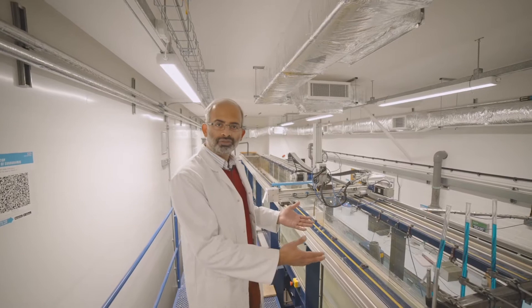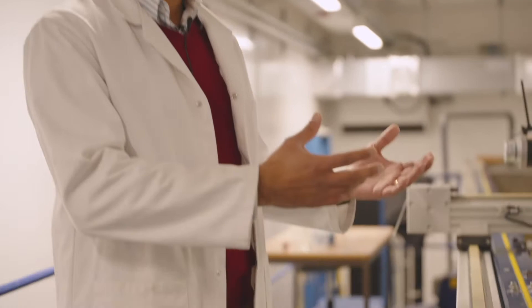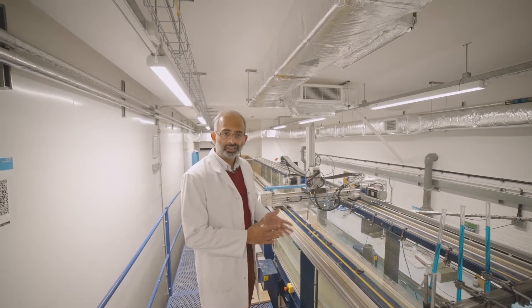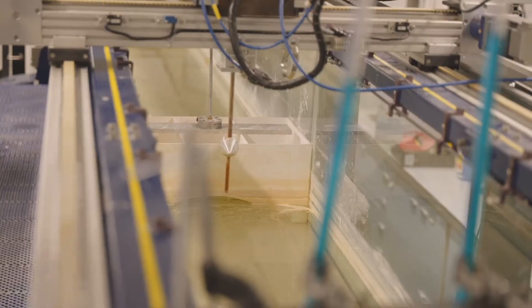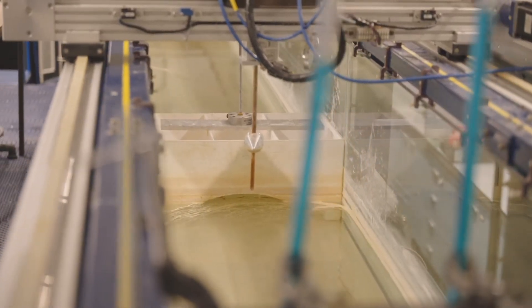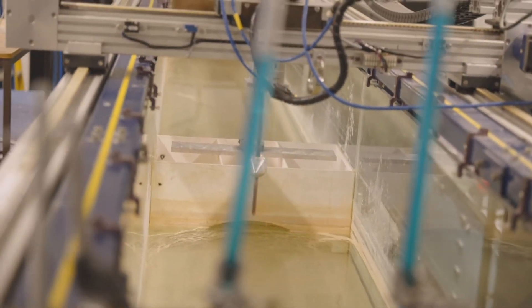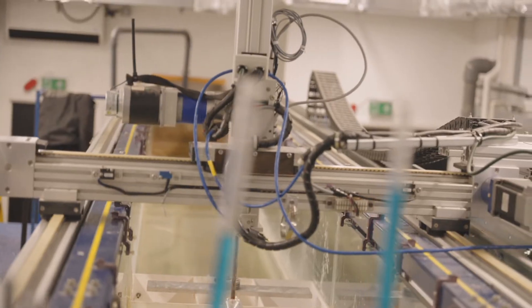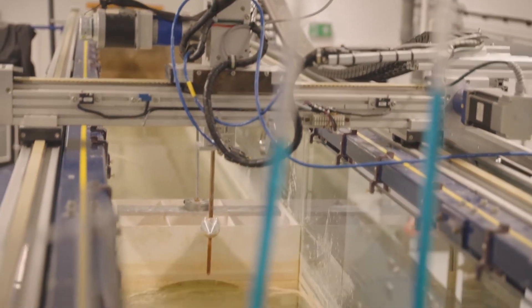We use this kind of flume specifically to look at what happens to structures that are in the watercourse. So in this case, we have a model of a masonry arch bridge in particular, and we are interested in understanding what happens to the bridge under extreme floods, particularly when the bridge gets inundated. We have set up the flow conditions for that purpose.